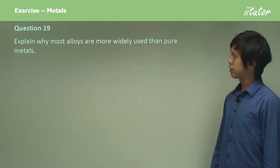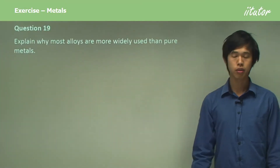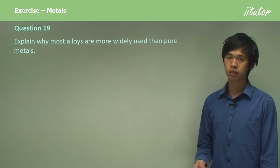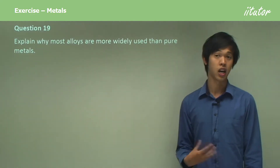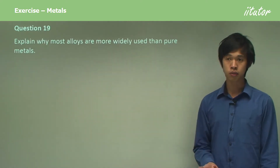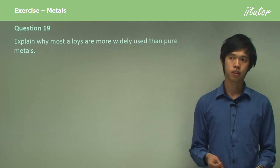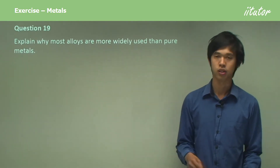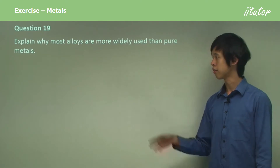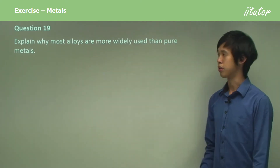Why are alloys more commonly used than pure metals? For instance, we don't really see iron being used very frequently — we see a lot of steel. We don't see a lot of copper being used; we see it in wires, but that's basically the only application. So why do we use alloys more than pure metals?